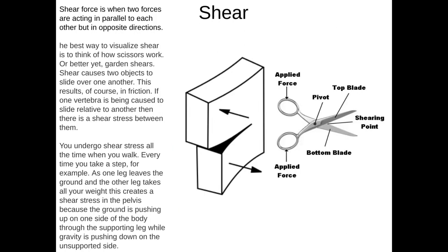The last force is shear force — perhaps the most difficult to understand conceptually. Shear force is when two forces act parallel to each other but in opposite directions. The best way to think about it is a pair of scissors: the top blade acts downward and the bottom blade acts upward. They each have the same amount of force applied by the hands but act in opposite directions. This causes friction, and that friction cuts or shears a material in two — which is why we call shears 'shears,' as when you shear sheep.